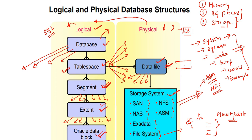The Oracle data block — also called the DB block — is the smallest unit, sized 8KB or 16KB depending on organizational requirements, with 8KB as the default. To summarize: tablespace is a logical entity, data file is a physical entity, and storage systems like NAS, SAN, ASM, NFS, and file system are the physical structures where data ultimately resides.